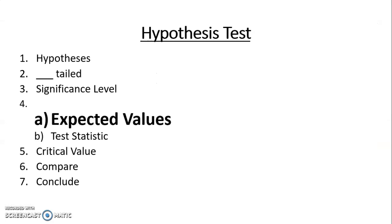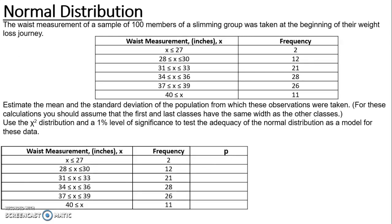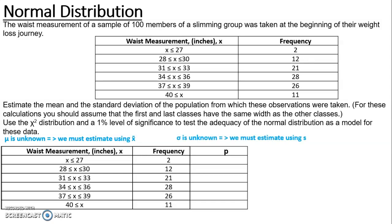Next we need to find our test statistic, and to do that we first need expected values. In this question we were specifically asked to estimate the mean and standard deviation. We should know at this point that we haven't been given a mu or a sigma-squared, and therefore we need to estimate them before we can work out any probabilities. Because mu is unknown we must estimate using x-bar, and because sigma is unknown we must estimate using s.